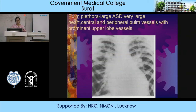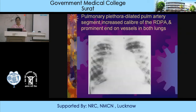Another case of pulmonary plethora showing a dilated pulmonary artery and dilated pulmonary artery segment. There is increased caliber of the right descending pulmonary artery and prominent end-on vessels located in both lungs.